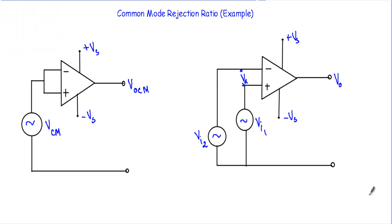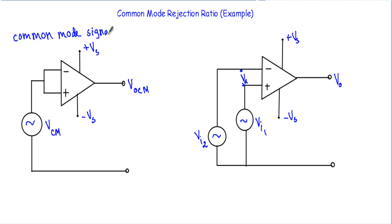In this video I will show you how to calculate the common mode rejection ratio of an operational amplifier circuit. When the same signal is applied to both the inverting and non-inverting terminals, that is known as the common mode signal. Here in this operational amplifier we are applying VCM to both the inverting and non-inverting terminals, therefore VCM will be our common mode signal.